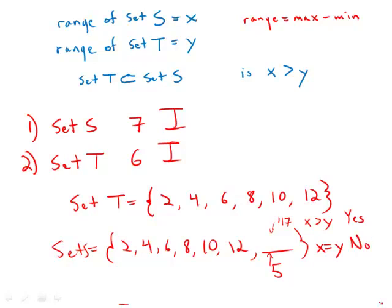And because we can answer the prompt question in both ways, it means that even with the combined information, we are still insufficient. So combined, the statements are insufficient, and the answer is E.